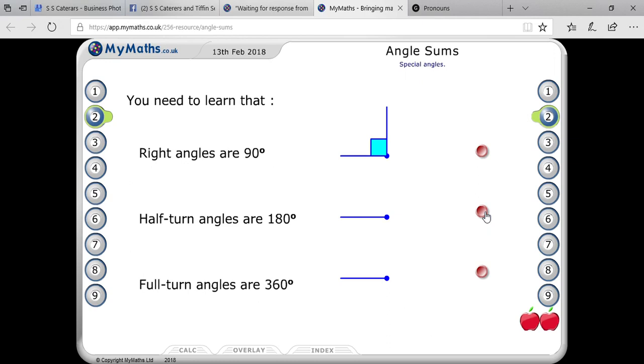Half-turn angles means you can also understand that when two quarter angles are combined, then it will be equal to half-turn angle. Like this you can see. And full-turn angles are 360.